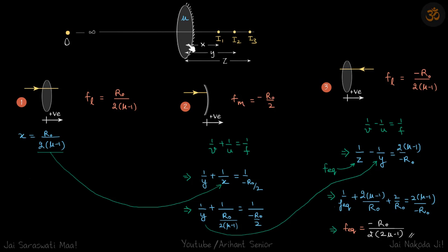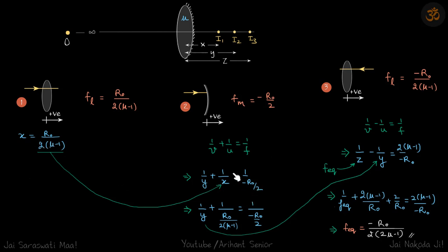First case: the object is at infinity, so the lens forms the image at its focus, giving x = r0 / 2(mu − 1). Next, the rays hit the mirror. Using the mirror formula, 1/y − 1/x = 1/f_m, with f_m = −r0/2. Substituting the value of x gives us the value of y.